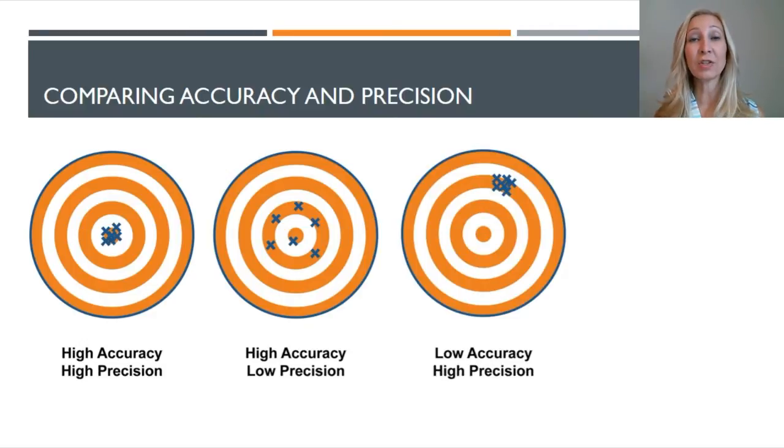Now on this third target, we are representing low accuracy but high precision. So if you look at each of the six trials, they're all clustered together. That means they're all close to each other, so they're highly precise, but they're way off from the center of the target, from the bullseye of the target. So they have low accuracy because they're away from the center, but high precision because they're close to each other.